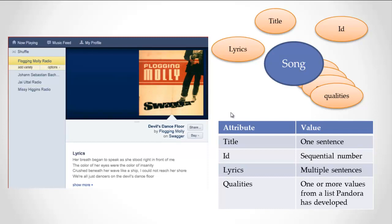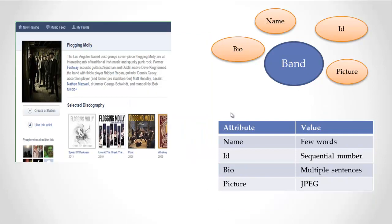We could take it apart looking for pieces of the user interface — we've had examples of this. In this case we're looking for the pieces of information. Now let's look at a band. I clicked on Flogging Molly and it gives me Flogging Molly's band page. The band has a name, clearly. The band has a bio — that's what's down here. The band has a picture. And the band has an ID. I'm always going to say that everything has an ID, whether I see it or not — everything in here has a unique ID, otherwise you would never be able to find it again.